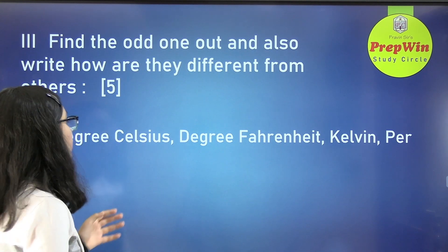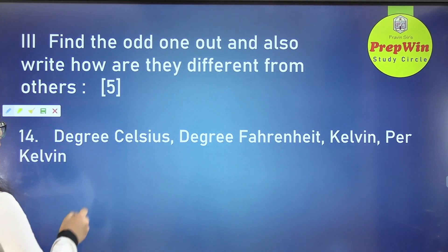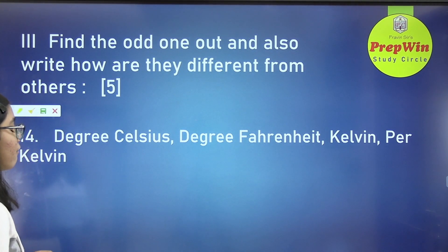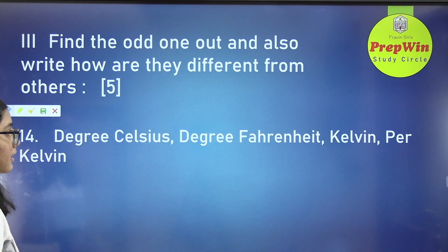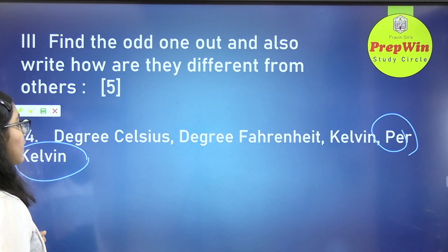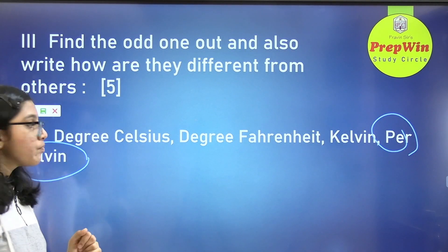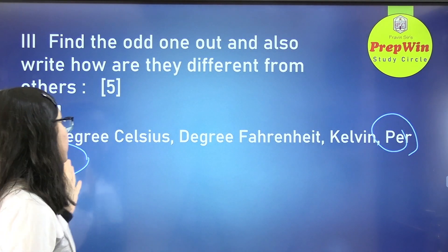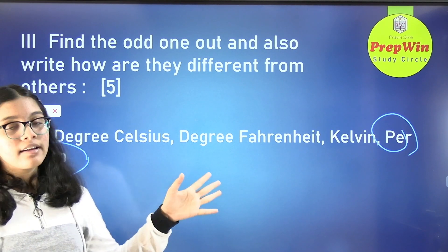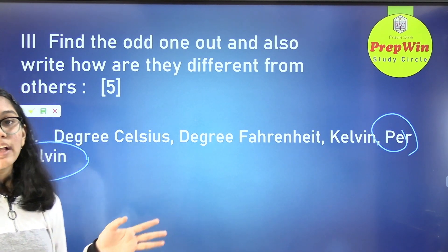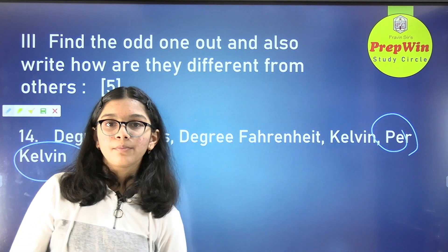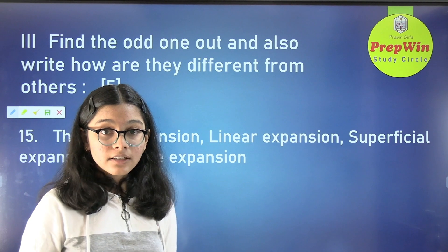The next question: degree Celsius, degree Fahrenheit, Kelvin, and per Kelvin. Per Kelvin is the correct answer because degree Celsius, degree Fahrenheit, and Kelvin are units of temperature.